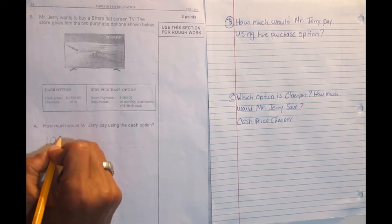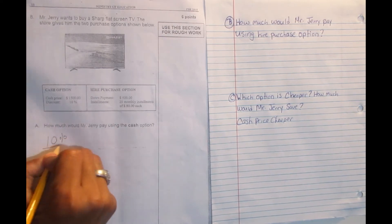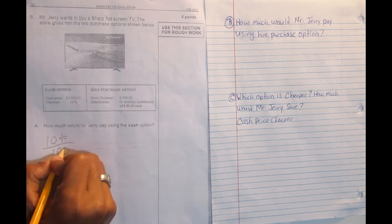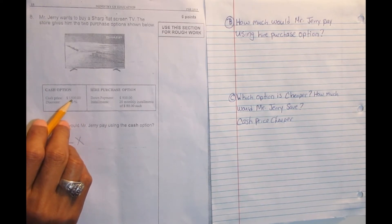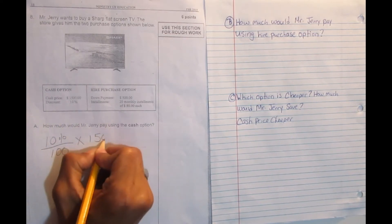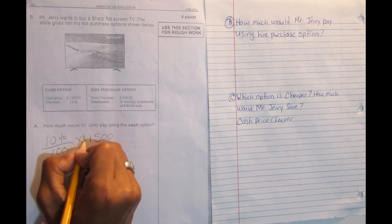Remember the cash option is 10% discount, and the percent always go over 100 times the price of the TV which is $1,500 over 1.